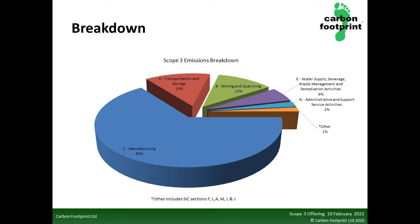The pie chart shows the breakdown of the company's emissions. As you can see, manufacturing makes up the greatest proportion of these emissions at 65%. If this company wanted better accuracy on its data, this is where it should focus its attention. Smaller emission sources are put into a category called other.